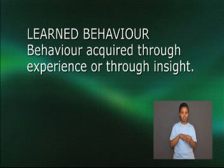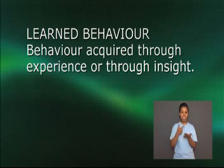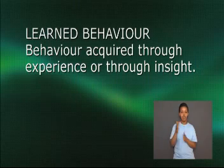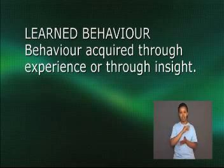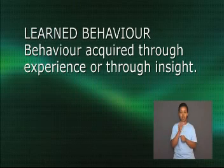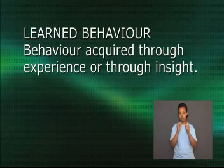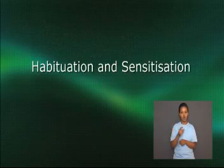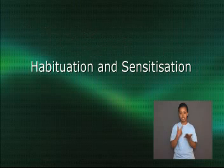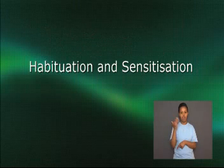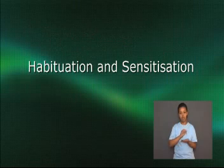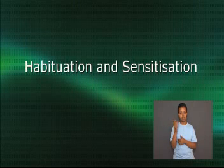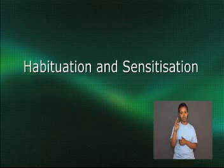Such as trial and error or through insight. Learned behaviors are usually not fully functional the first time they are performed. As we mentioned in our definition, trial and error is a way to acquire learned behavior. Trial and error simply brings about an improvement in the effectiveness of the behavior pattern. There are many different types of learned behaviors. In this lesson, we will be looking at two types: habituation and sensitization.